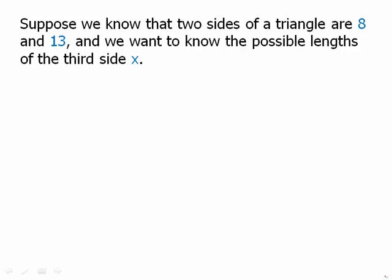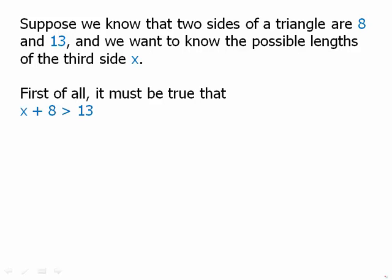Suppose we know that two sides of a triangle are 8 and 13 and we want to know the possible lengths of the third side. Well, certainly it's true that if we take the sum of the unknown side plus 8, it has to be bigger than 13. Well, from this inequality we could subtract 8 from both sides and it means that that x has to be greater than 5. So that's one of the statements we have.